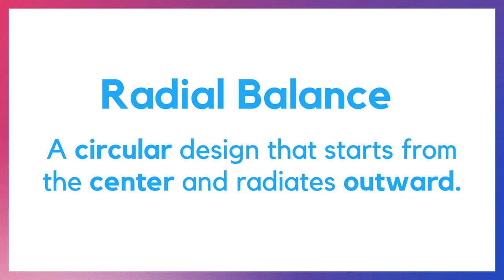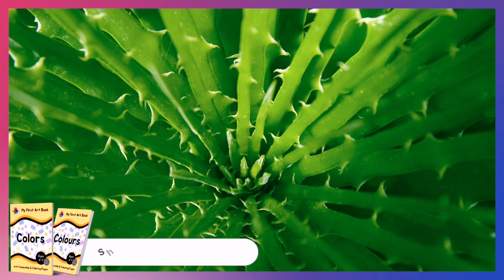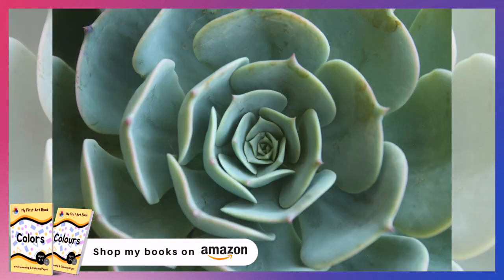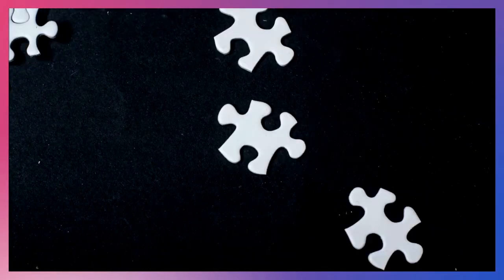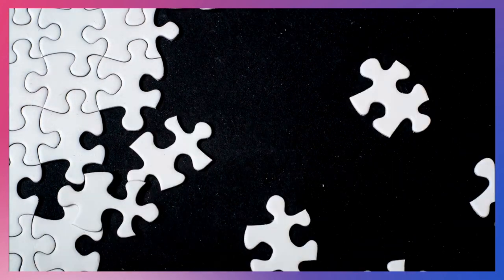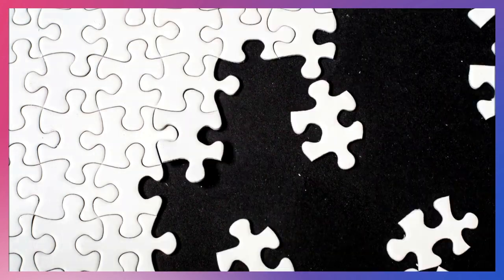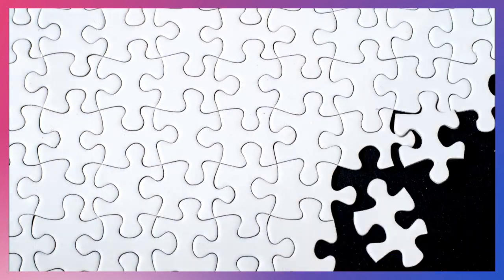In asymmetrical balance, balance is achieved based on qualities such as color, value, and position. Radial balance is characterized by a circular design that starts from the center and radiates outward. Radial balance can often be seen in nature, and a mandala is another example of radial balance. Here are a few guidelines to consider when trying to achieve a sense of balance within your artwork.